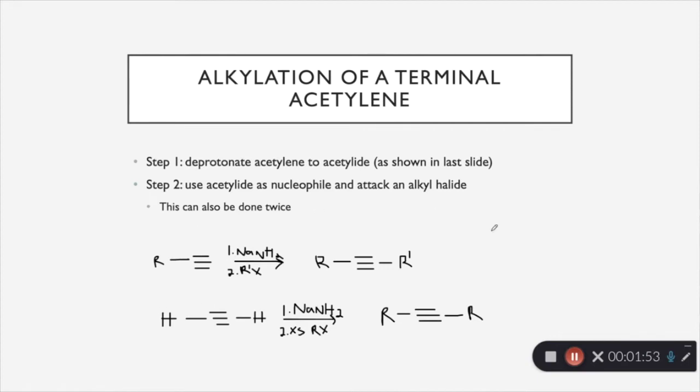So for step one, I'm going to draw out the mechanism over here. You have your R and then your terminal alkyne. And then step one is going to use sodium amide to deprotonate this. And that will give you your acetylide. So now we have a lone pair right here and a negative charge. And then we are going to use this as a nucleophile.